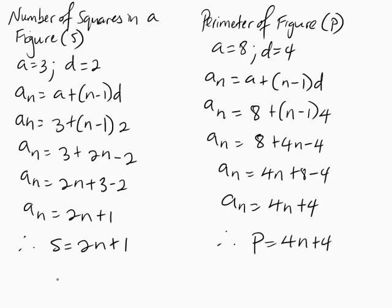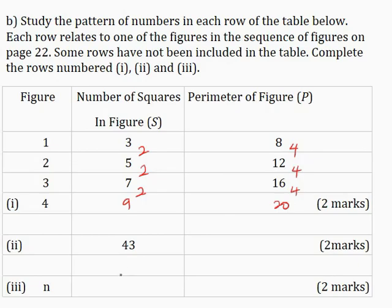I will now write the formulas derived for S and P into the table. S = 2N + 1 and P = 4N + 4. The next thing I will do is use these derived formulas for S and P to solve for any remaining unknowns.